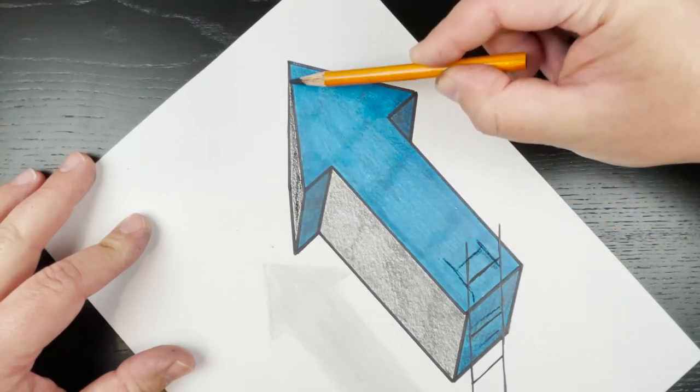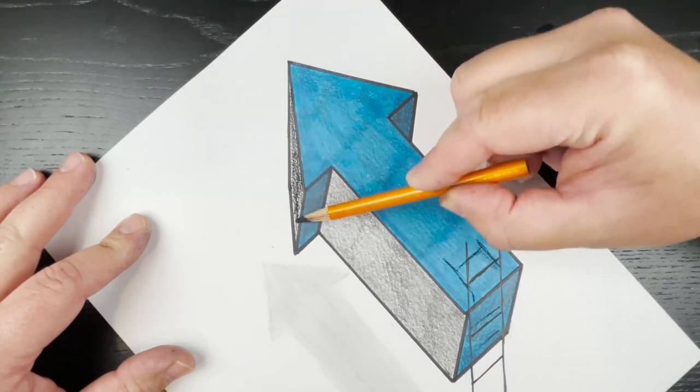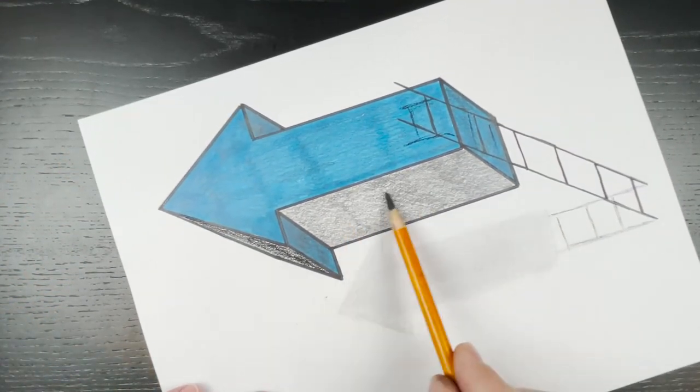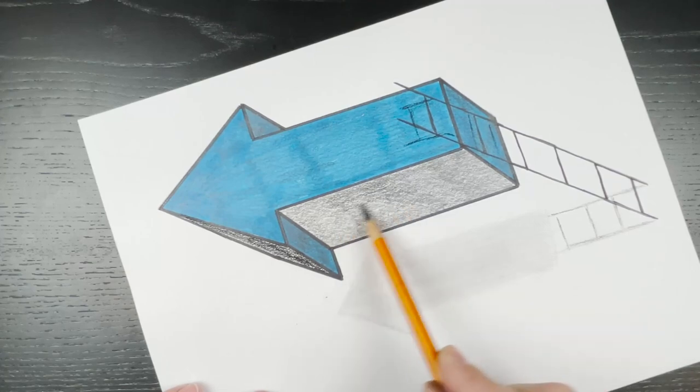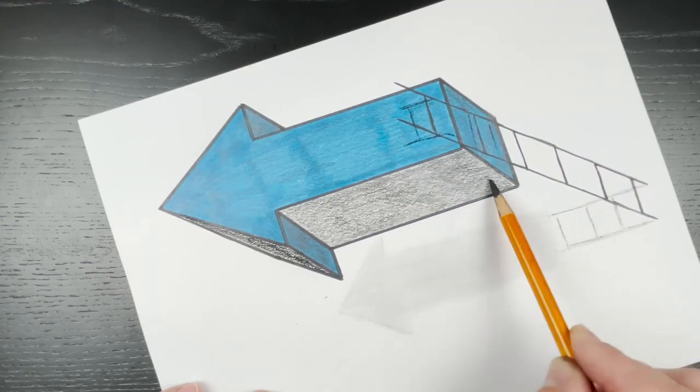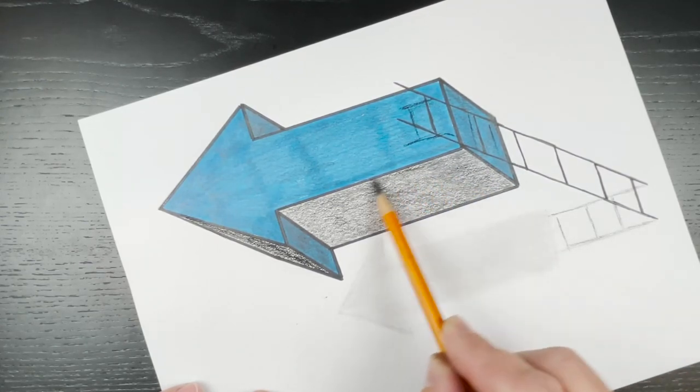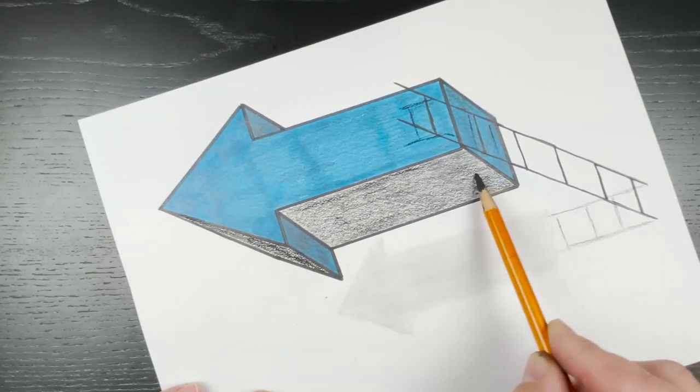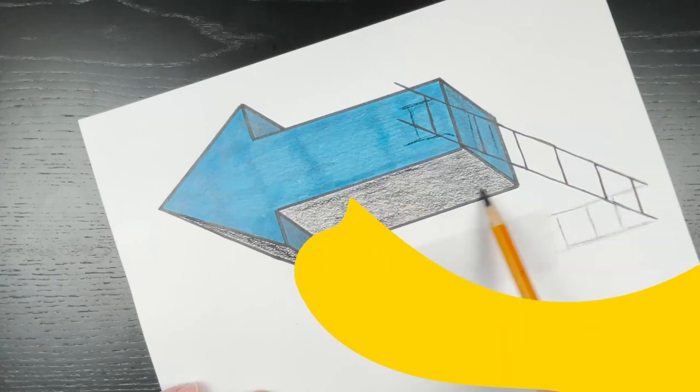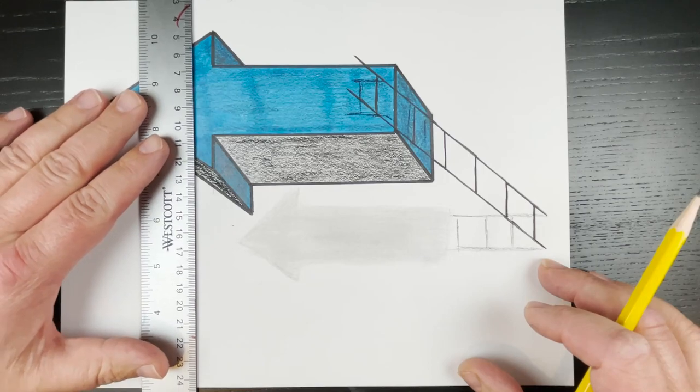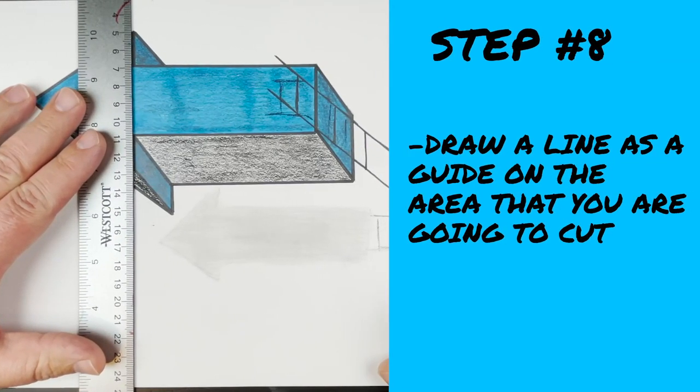That's basically it for that part. Now what I'm going to do is, just looking at it, I'm going to darken these edges up just a little bit more. Because if you make it a little bit darker, it makes it really look like it's popping off the paper. Feel free to make it a little darker. Feel free to even add some color on this too if you'd like.